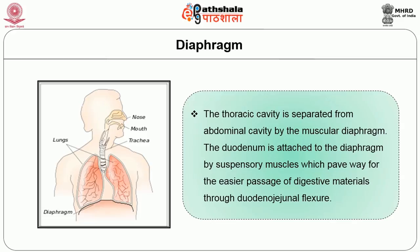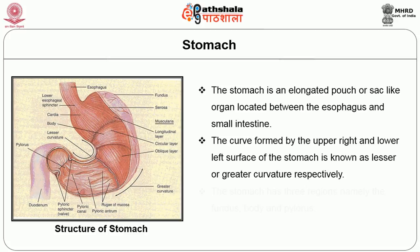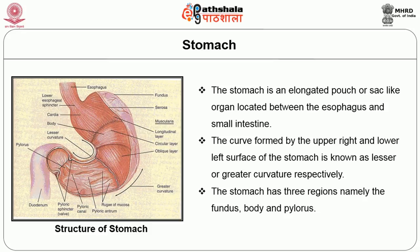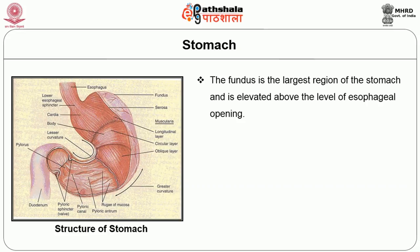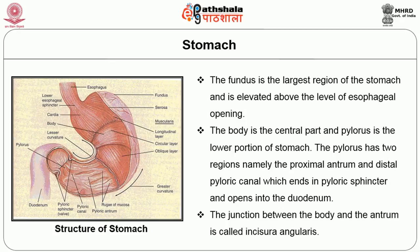The stomach is an elongated pouch or sac-like organ located between the esophagus and the small intestine. The curve formed by the upper right and lower left surfaces of the stomach is known as the lesser or greater curvature respectively. The stomach has three regions: the fundus, the body, and the pylorus. The fundus is the largest region, elevated above the level of the esophageal opening. The body is the central part, and the pylorus is the lower portion, which has a proximal antrum and a distal pyloric canal ending in the pyloric sphincter, opening into the duodenum. The junction between the body and the antrum is called the incisura angularis.